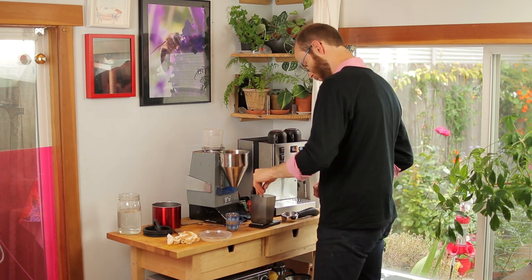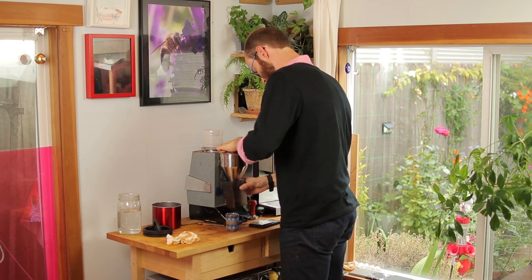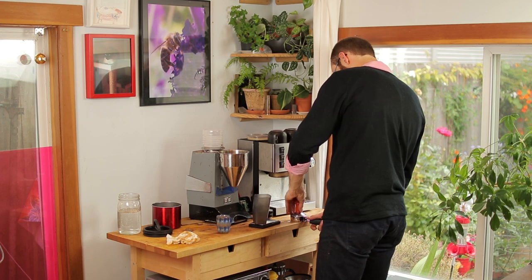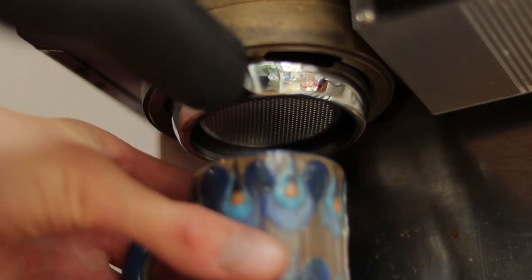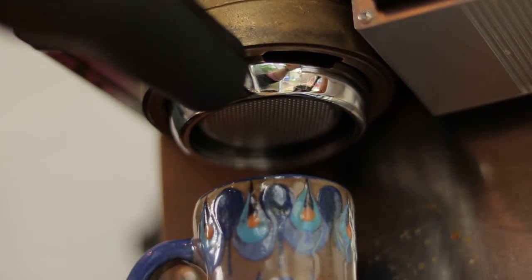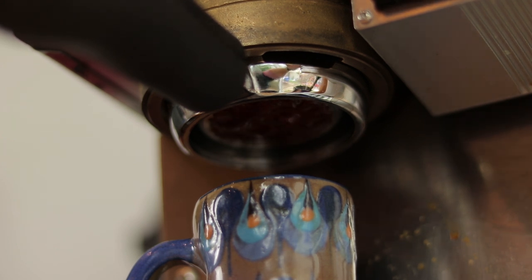For this last shot, I've got a pretty good idea of what to do. I reduce the dose from 15.7 grams to 15.4 grams to give a little less resistance with the same fine grind. Then I grind and distribute as I have before, paying close attention to the tamping.